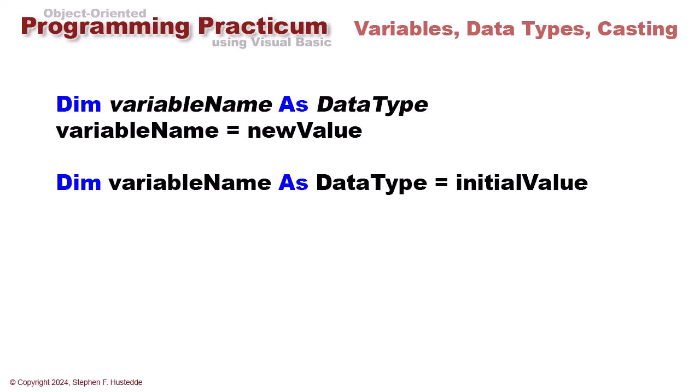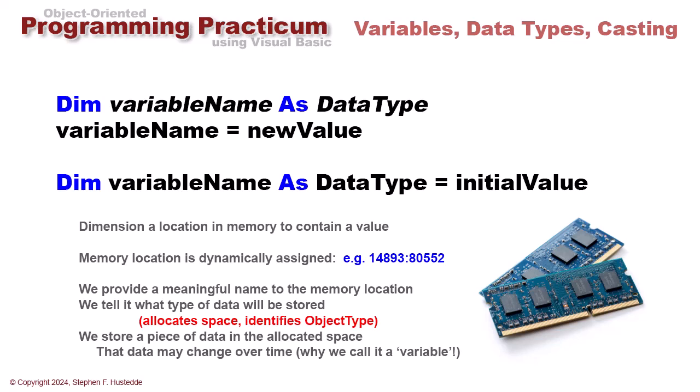We assign a value using the equals operator, assigning the value on the right to the container on the left. We can do it all at the same time by giving an initial value when we dimension the variables. We can say dim variable name as data type equals initial value.